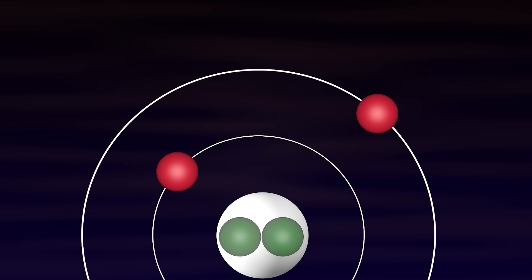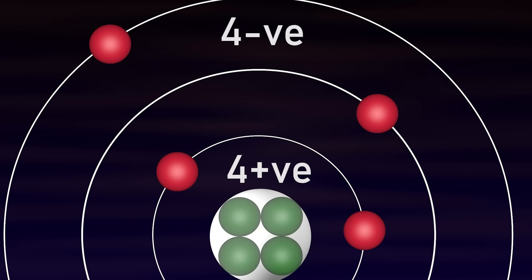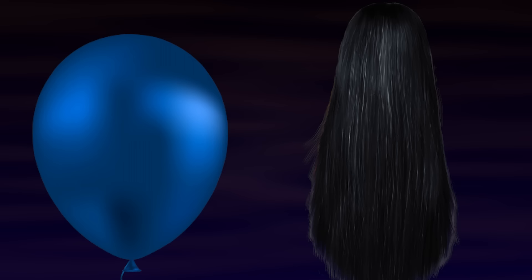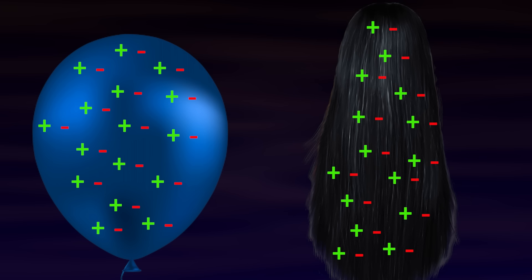And one more thing to note, the number of positive charges and negative charges is equal in an atom. Or in other words, if I take this hair or balloon as a whole, the net charge in them is zero and they remain normally neutral.